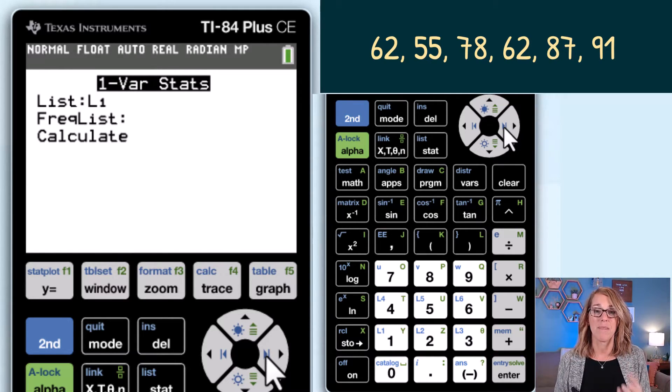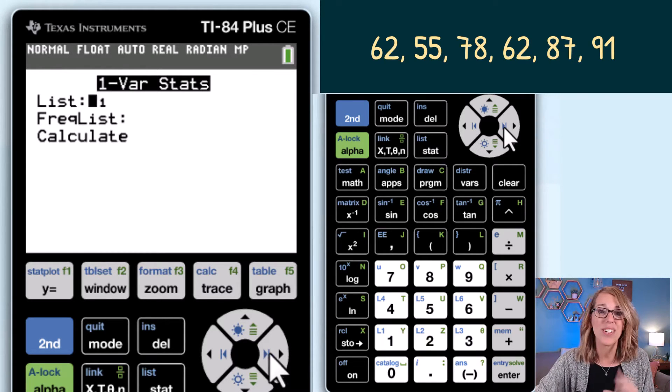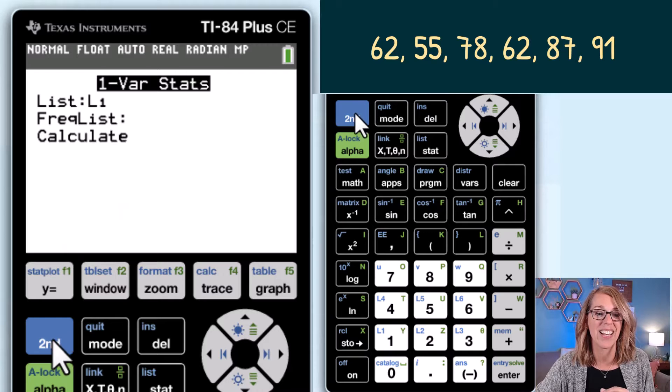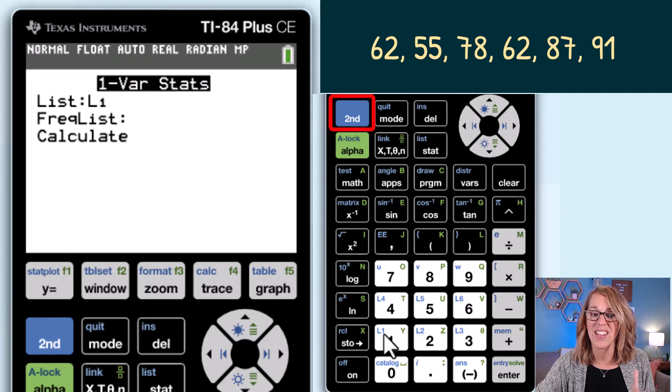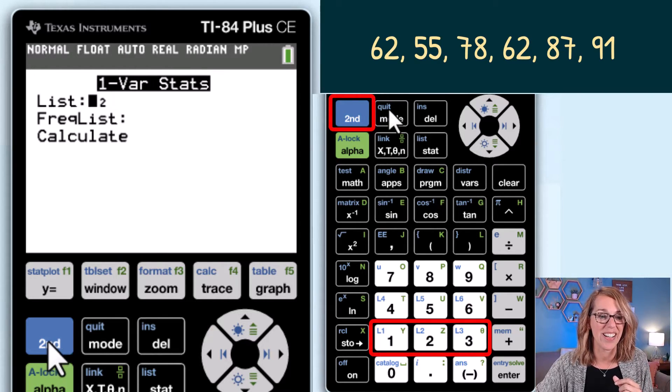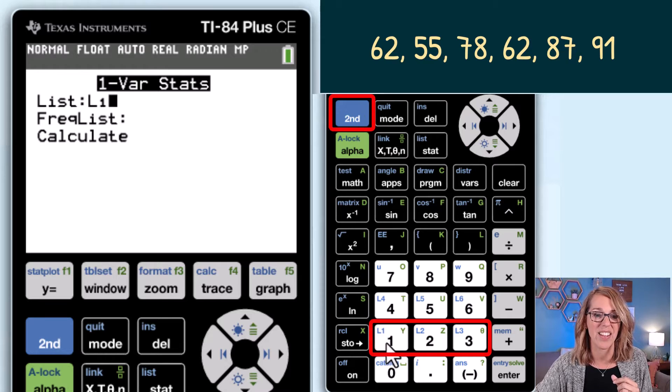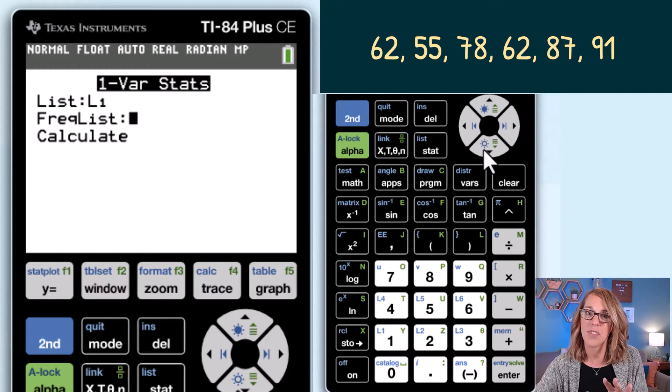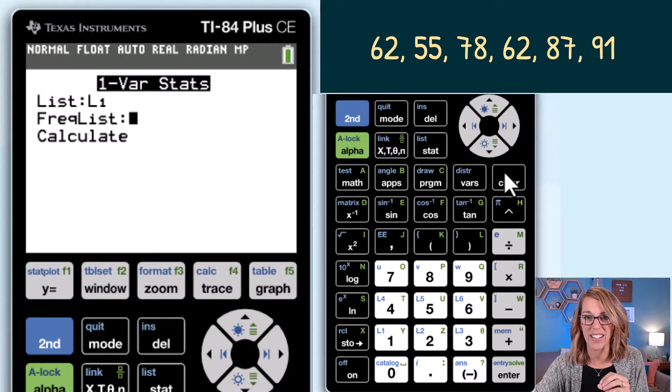I do want list one but if you happen to have your data in a different list you can grab the other list by clicking on second and then any of the numbers that your list happens to be. You go second two for L2 and so on. I'm going to do second and then L1. We don't have a frequency list so if you have something here you can click the clear button.